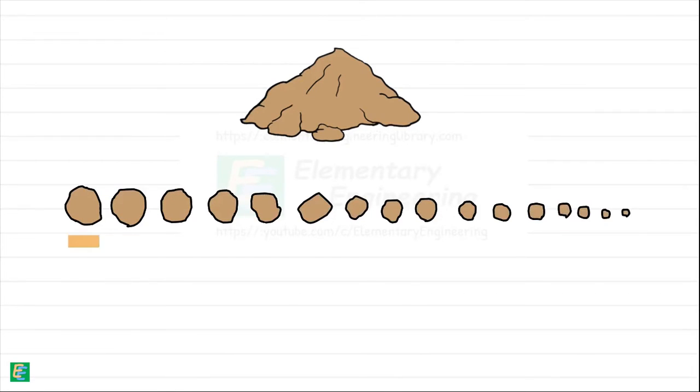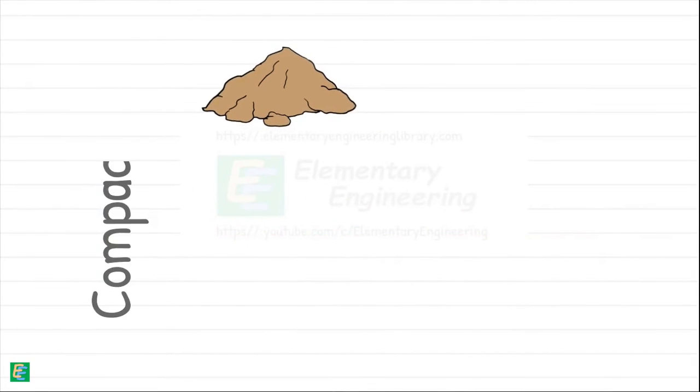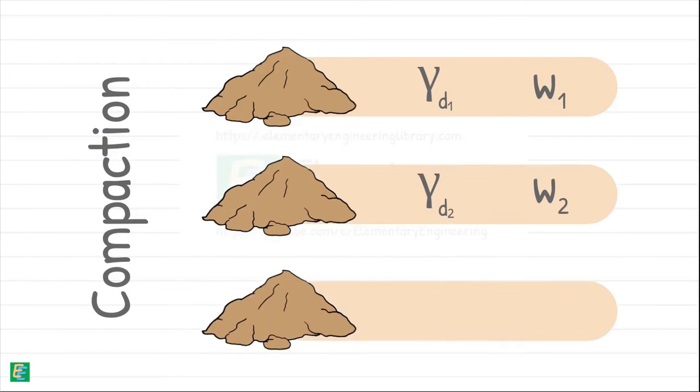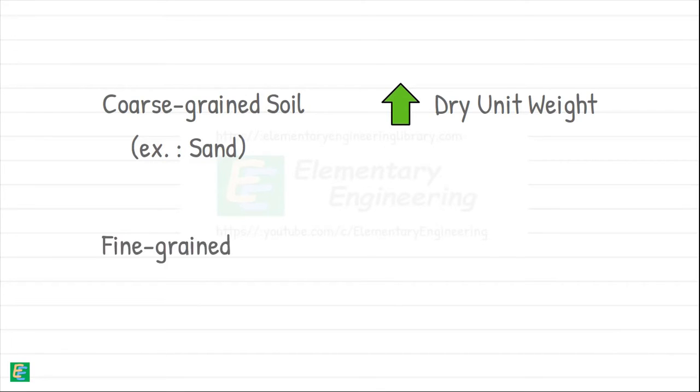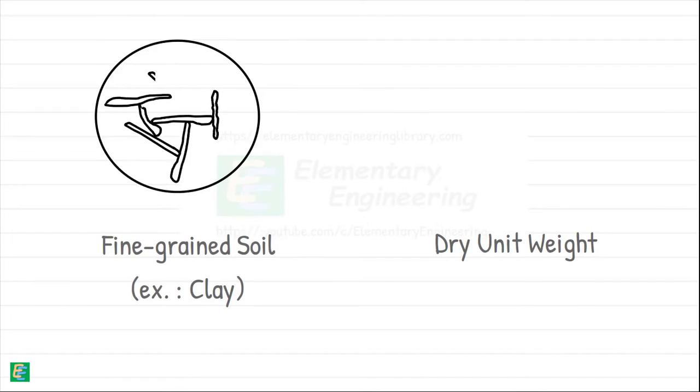Next factor is type of soil. Soils are generally classified into different types based on their particle size and composition. Upon compaction, maximum dry unit weight achieved and respective optimum moisture content is different for different soils. Coarse-grained soils like sand usually achieve higher dry unit weight when compacted compared to fine-grained soils such as clay. It happens because fine-grained soils with their small, flaky, and plate-like particles tend to have more void spaces between the particles even when compacted. These void spaces reduce the overall density of soil, resulting in a lower dry unit weight.